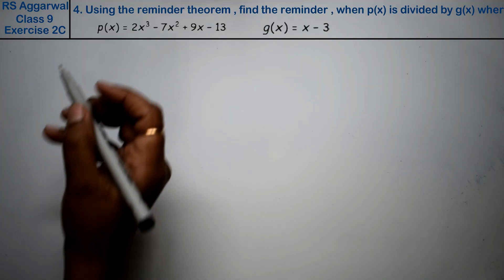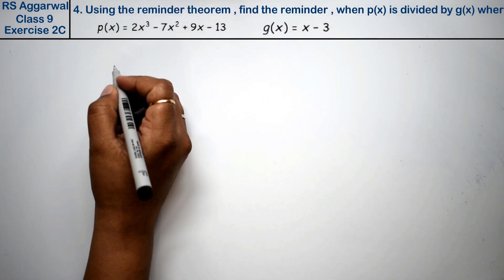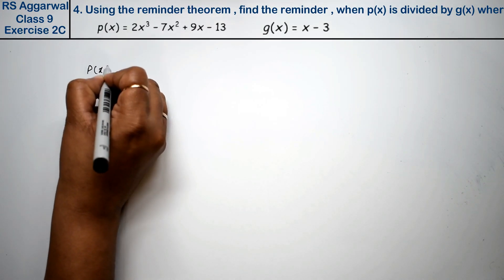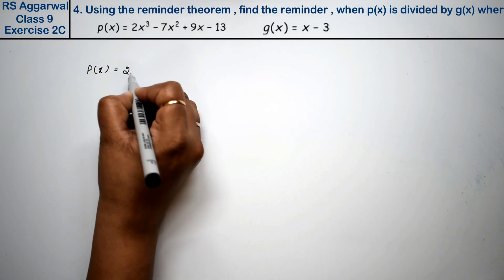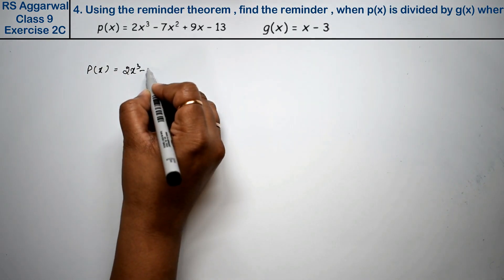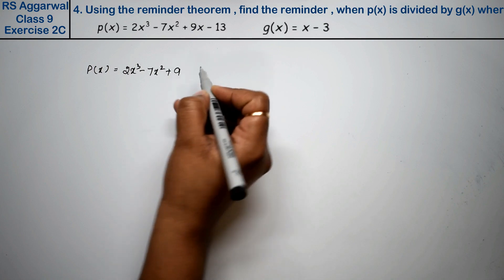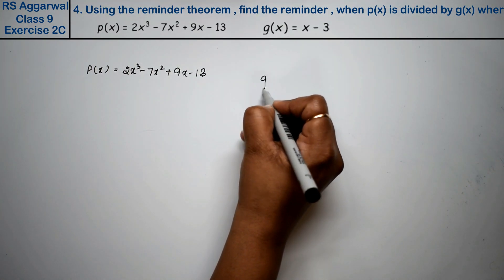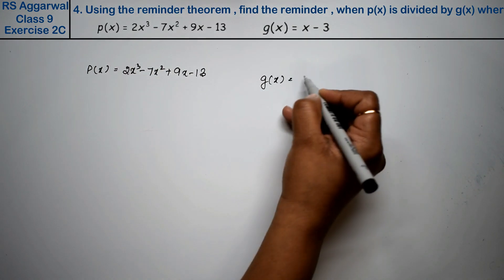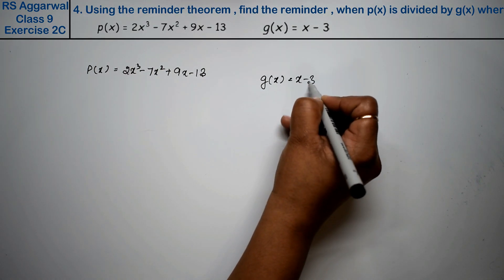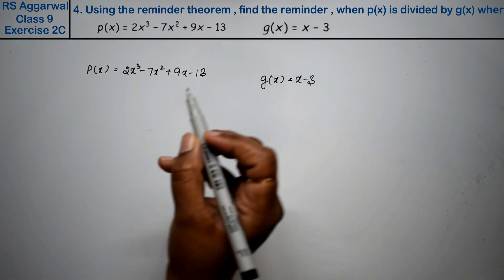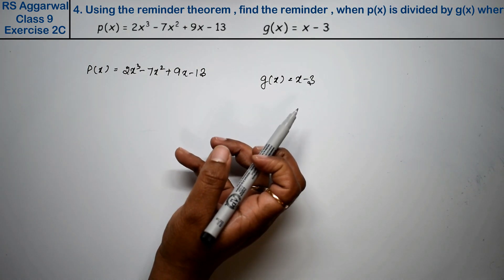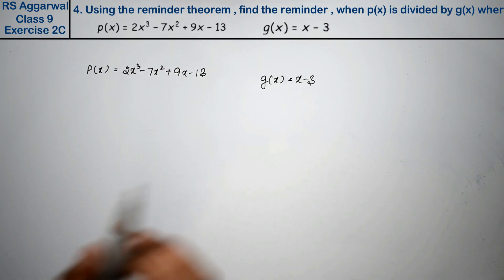Let's do question number 4 of exercise 2c. The polynomial question number 4 is: if p(x) equals 2x³ minus 7x² plus 9x minus 13 and g(x) equals x minus 3, using the remainder theorem find the remainder when p(x) is divided by g(x), where p(x) and g(x) are given.